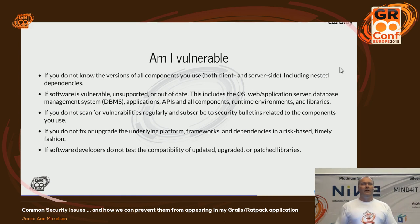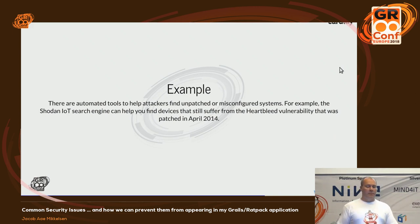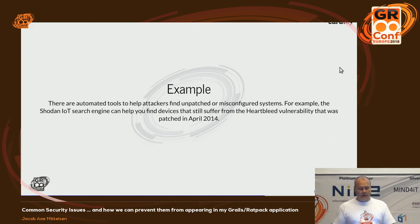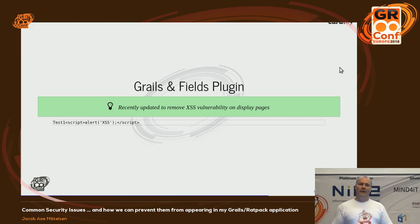Lots of automated tools are available in the hacking world to find unpatched and misconfigured systems — for example the Shodan search engine can help you find devices that still suffer from the Heartbleed vulnerability, which was patched back in 2014. Anyone here using the Fields plugin? If you've updated your application recently — in the last five or six days — you are potentially suffering from a security risk. The Grails Fields plugin, even the one in the current web profile, suffers from a cross-site scripting vulnerability.